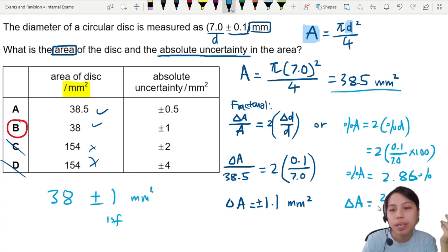So you're going to take 2.86 over 100 times the actual value of A. That's how you get your absolute uncertainty. So let's do that 38.5 times 2.86 divided by 100.